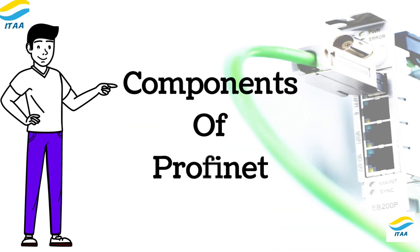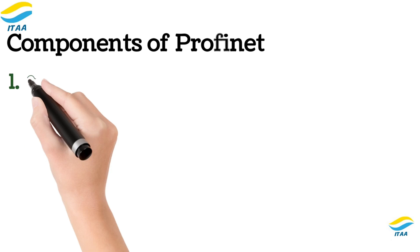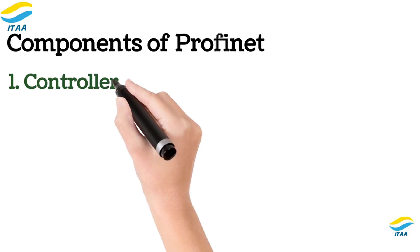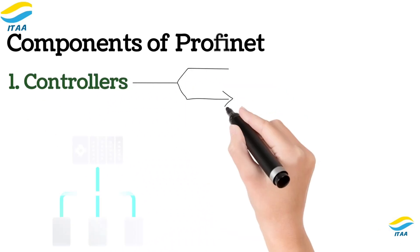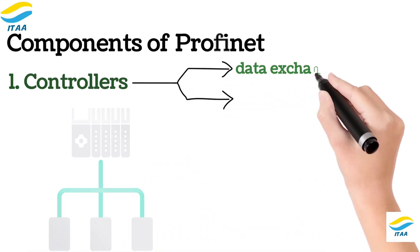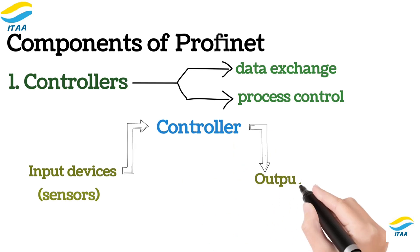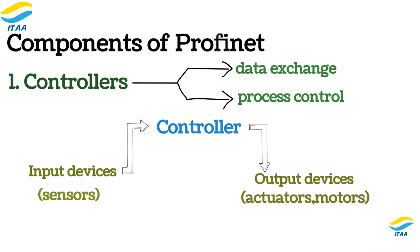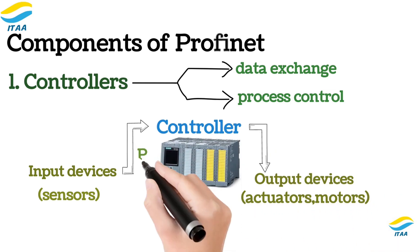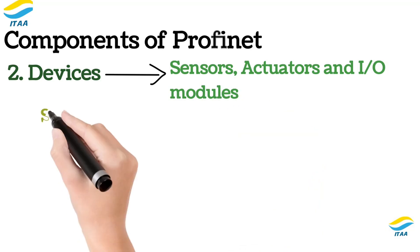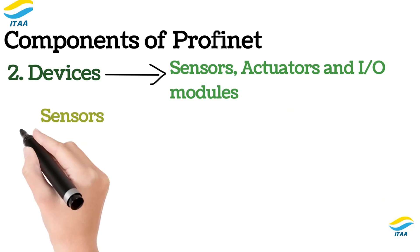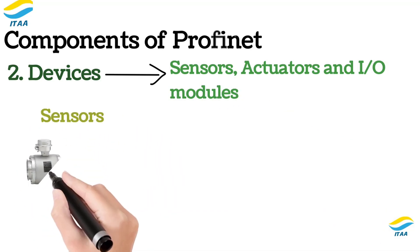A PROFINET network is made of several key components. Controllers such as PLCs are the brains of the system. They receive input data from sensors and send output commands to actuators. Controllers also store configurations and run control logic for process automation.